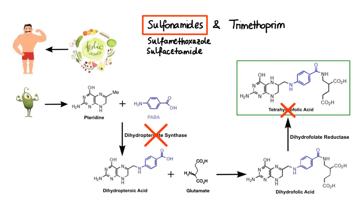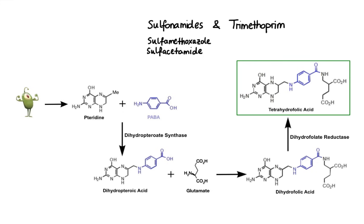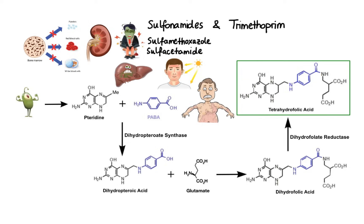Unlike sulfonamides, trimethoprim targets the second key enzyme in the folic acid synthesis pathway, dihydrofolate reductase. As an analog of dihydrofolic acid, trimethoprim competitively inhibits this enzyme, thus effectively disrupting production of tetrahydrofolic acid. When it comes to side effects, sulfonamides commonly cause GI disturbances such as nausea, vomiting, and diarrhea, as well as photosensitivity. Less common but more serious side effects include renal stones, hepatotoxicity, bone marrow suppression, and allergic reactions ranging from rash or hives to anaphylaxis and Stevens-Johnson syndrome. Side effects of trimethoprim are more modest and generally limited to upset stomach, nausea, vomiting, and skin rashes.